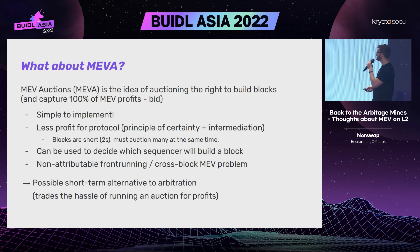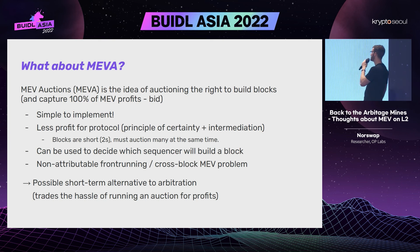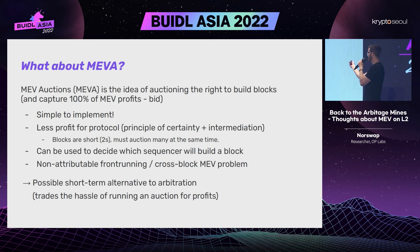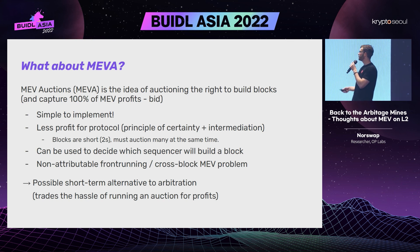MEVA is simple to implement but brings less profit to the protocol due to the principles of certainty and intermediation — you have one more intermediary and you're auctioning many blocks at once. However, it has the advantage of deciding which sequencer builds a block, since whoever wins the auction gets to build it. The downside is that with a public mempool, anyone who can see it could front-run, but MEVA is a viable short-term or alternative approach to arbitration.